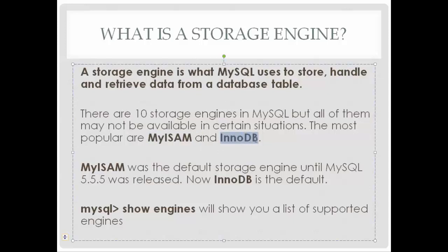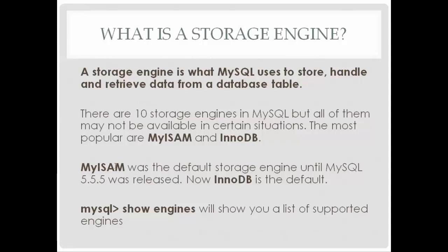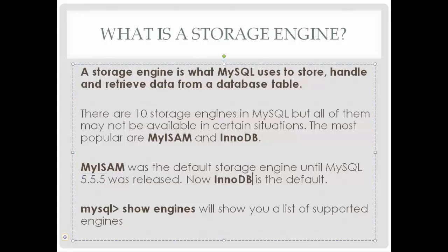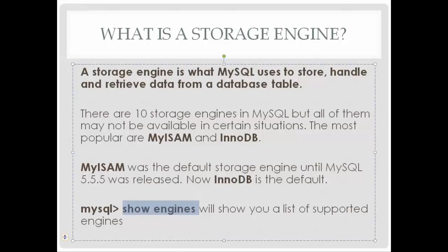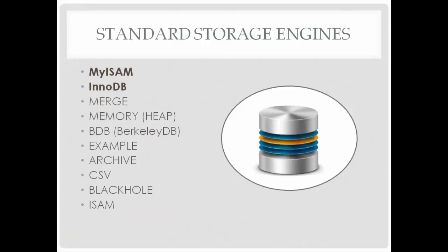The two main storage engines used are MyISAM and InnoDB. Up until MySQL 5.5.5 was released, MyISAM was the default, but from that version onward InnoDB is the default. You can see which storage engines are available by going to the command line and running SHOW ENGINES — that'll show you a list of all supported engines. The available MySQL engines include MyISAM, InnoDB, Merge, Memory (also known as Heap), BDB (also known as Berkeley DB), Example, Archive, CSV, Blackhole, and ISAM.